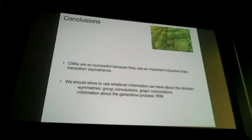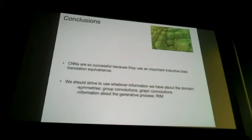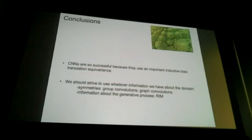To conclude: CNNs are perhaps the most successful thing in deep learning because they use a very important piece of information — translation equivariance. We should strive to put more known inductive biases into our deep learning methods. Symmetries can be embedded into convolutions in many ways with interesting improvements. Graph convolutions handle set-structured data. And more generally, if you know the whole generative process, you should embed it directly into your neural network rather than ignoring it — as the RIM demonstrated. Thank you.